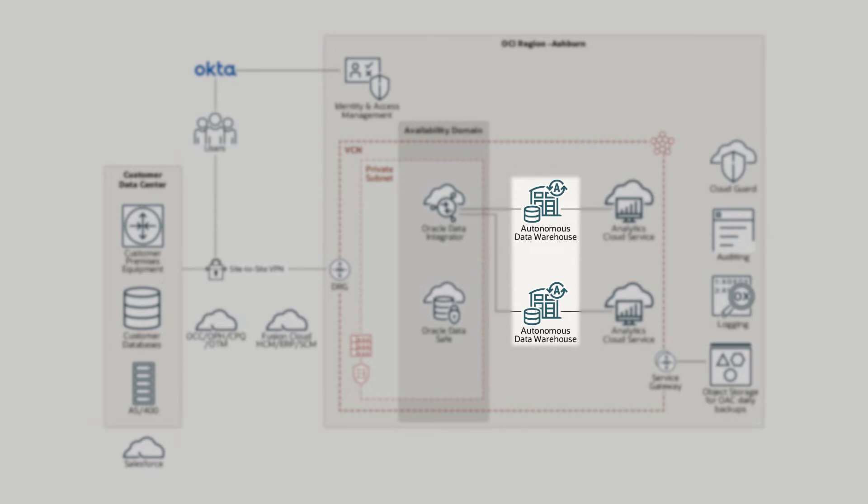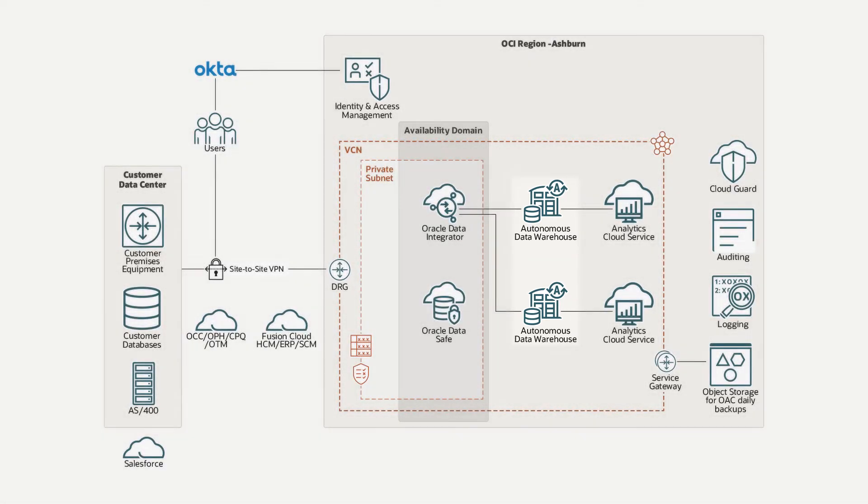The Autonomous Data Warehouse is a huge data warehouse — it's one single source of truth, and that gets refreshed on a nightly basis. We load the data on a nightly basis, and some of the data gets loaded on an hourly basis, like from Salesforce, the quote information, because it's rapidly changing information. So that gets refreshed on an hourly basis.